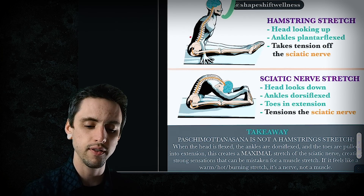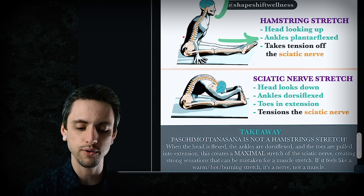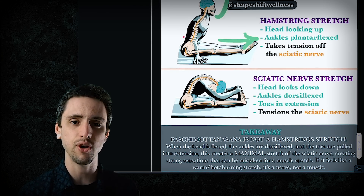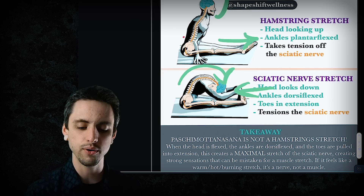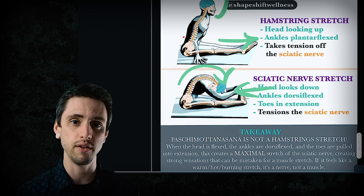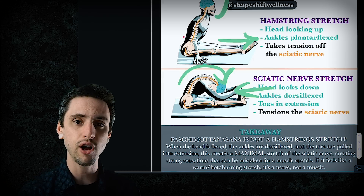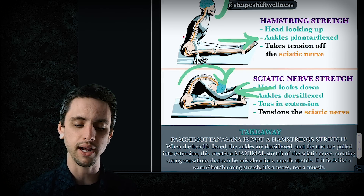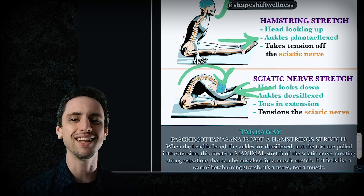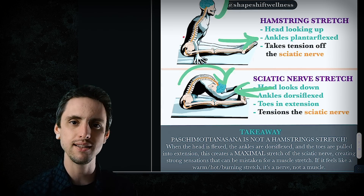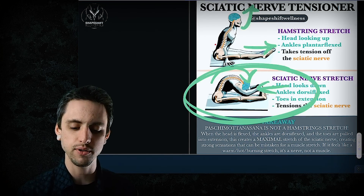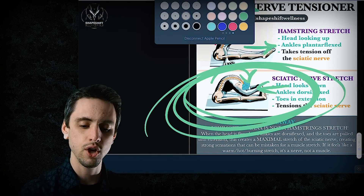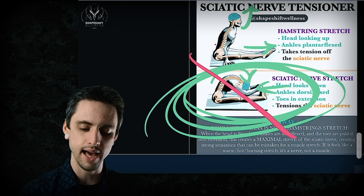When you lift the head and point the toes, you take tension off the nerves. But when you round the head, try to touch your head to your knees, and pull the toes toward your face, you put a ton of tension on the sciatic nerve and your spinal column — which is anchored to your brain, so it's pulling tension through that whole system. So if you thought that rounded pose was giving you a better hamstring stretch, it is not.